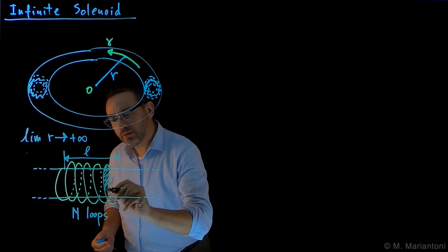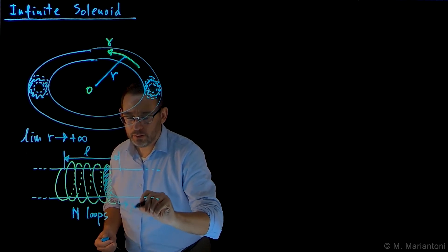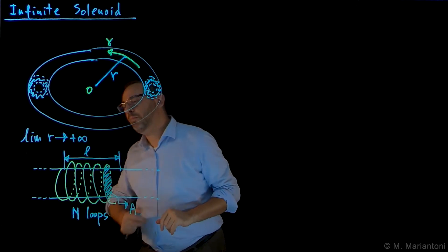And the area here associated with one of these loops, let's call it simply A. It's a sigma surface, open surface, and it's an area A.